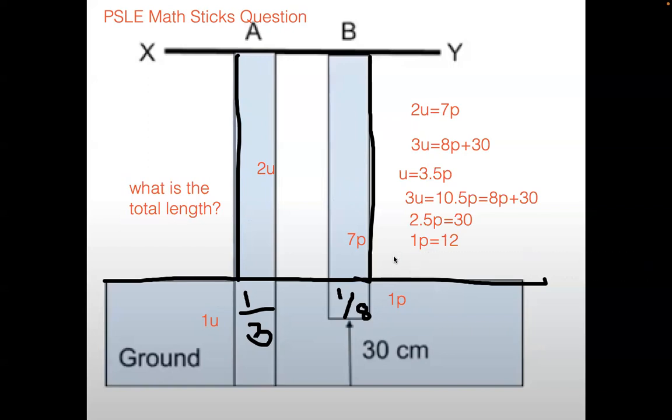We already can find out the length of stick B, which is 8P equals to 96, and the length of stick A, which is 8P plus 30 equals to 126. And hence, the total length will be 96 plus 126 equals to 222.